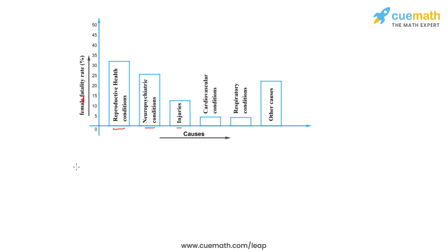Now we'll go on to the second bit. It can be visualized from the graph that the female fatality rate due to reproductive health conditions is more than double than that of fatality rate owing to injuries. So this is the major cause that we get.